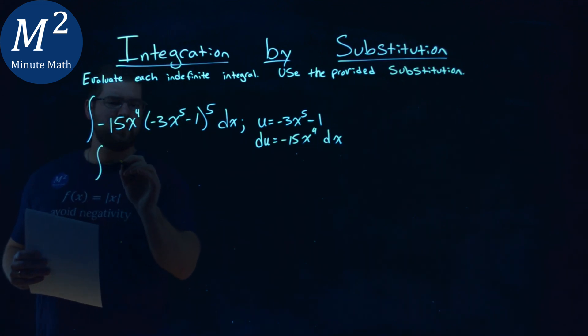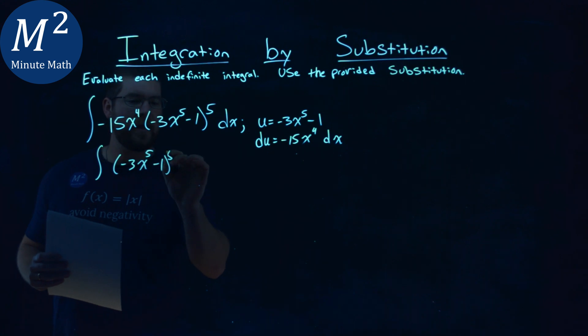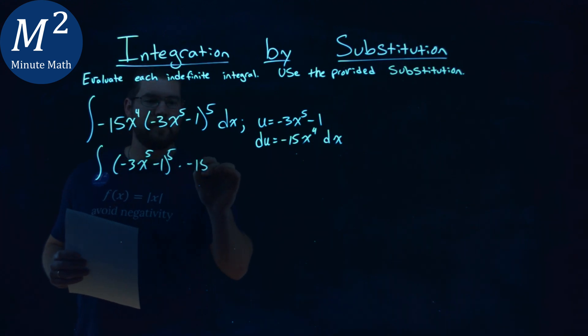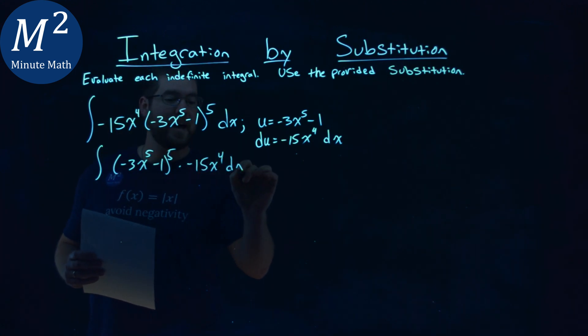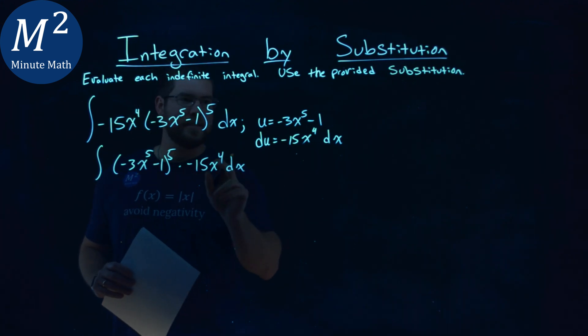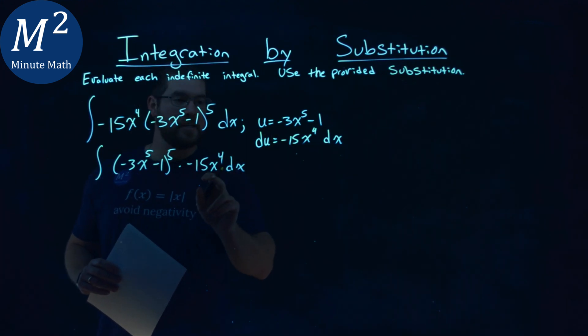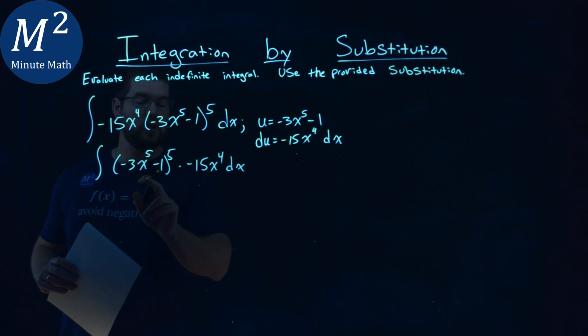And if you need to see it separately, you can write it like this. So we have negative 3x to the fifth minus 1 to the fifth power times negative 15x to the fourth dx. And now it's a little easier to see where parts line up. My du is written right here, and my u is right here.